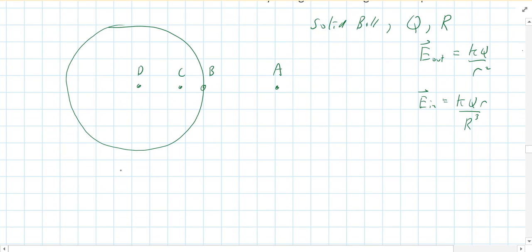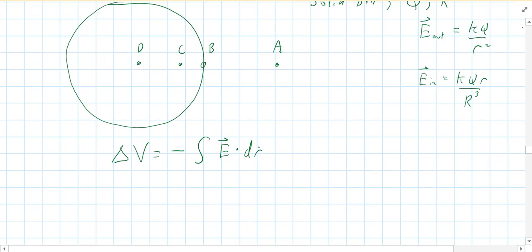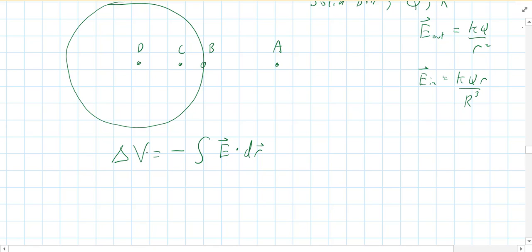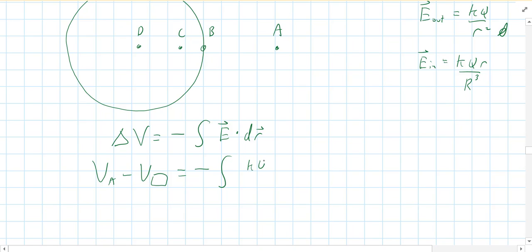Because we know the electric field everywhere — both outside and inside the ball — we're going to use method one to find the change in voltage. Change in voltage in general is negative the integral of E dot dr, where we use dr because we're varying a radius. We have to have a place to start, so this is V at A minus V at some point equals negative the integral of E.